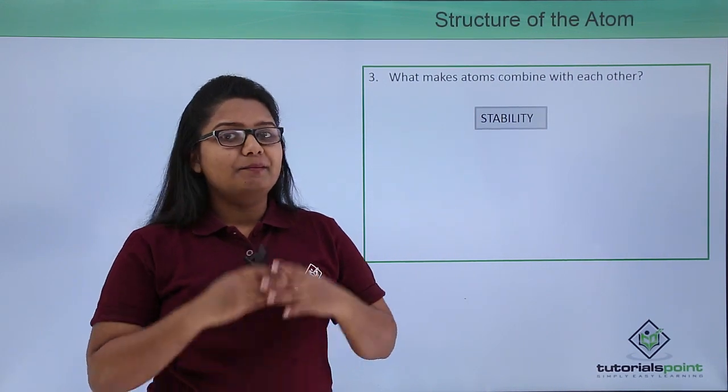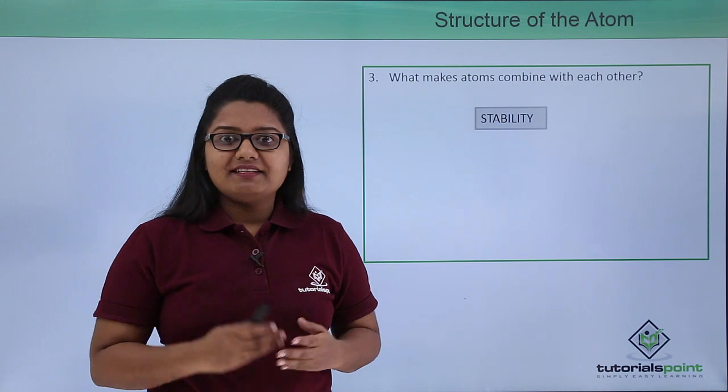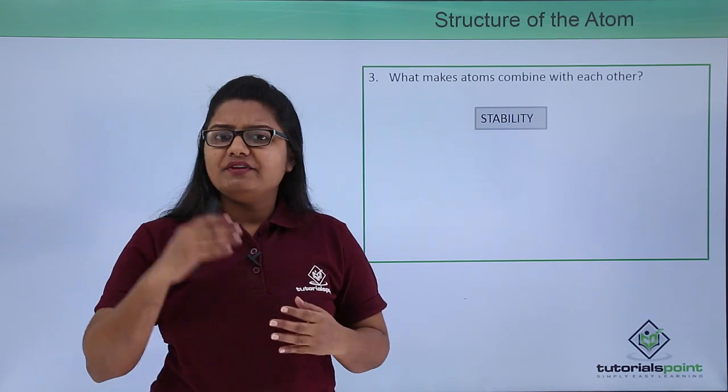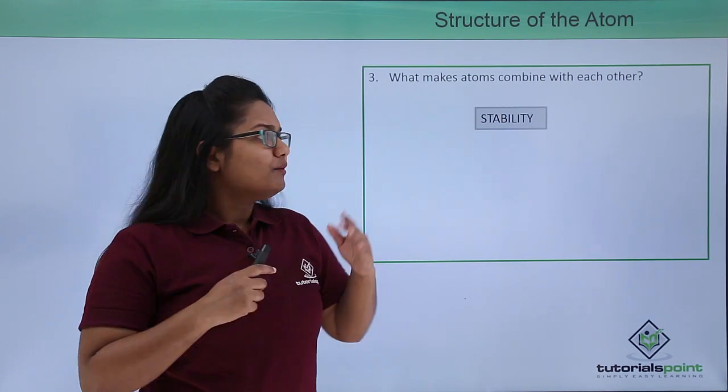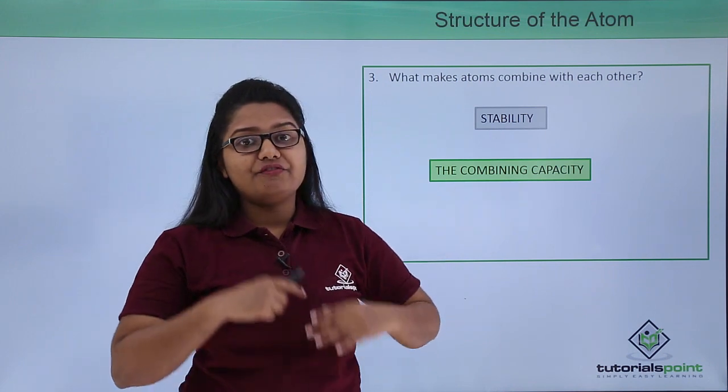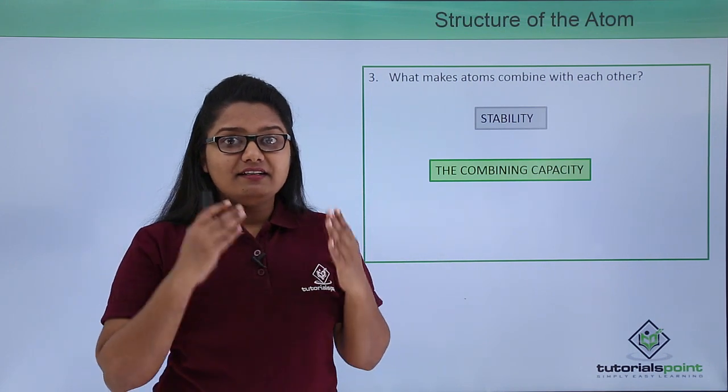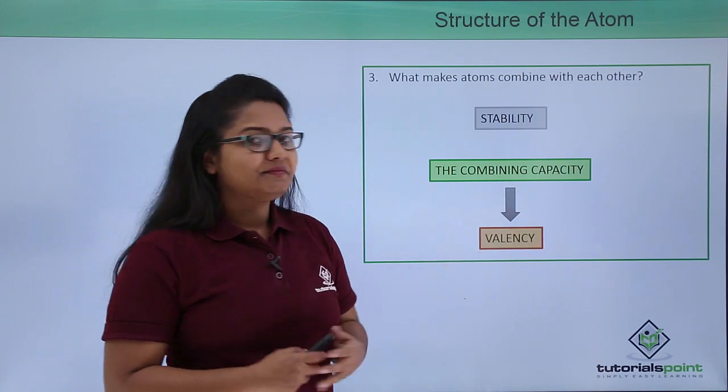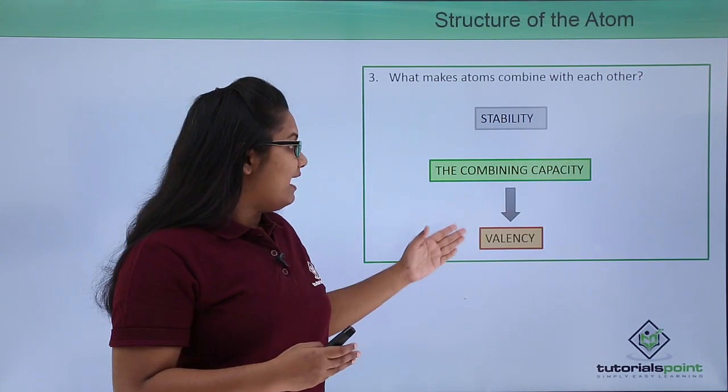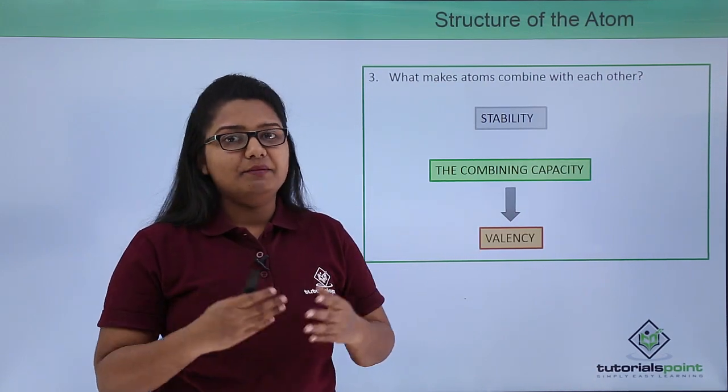Now some atoms are very good at combining with each other, but there are some other atoms which are not so good at it. Now this combining capacity of an atom is measured in terms of valency. We will learn about this valency in detail in our upcoming videos.